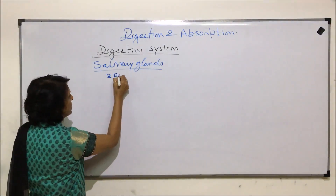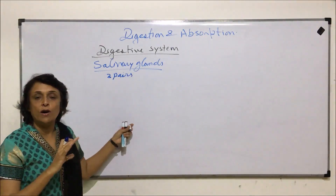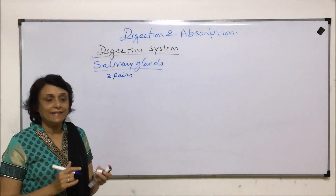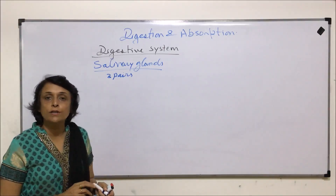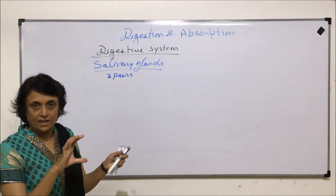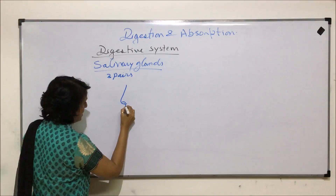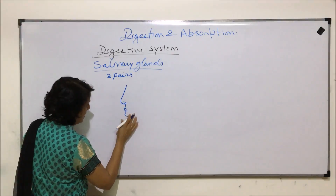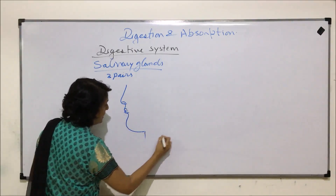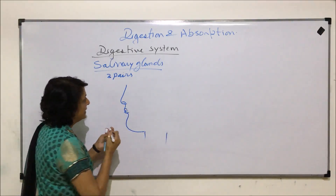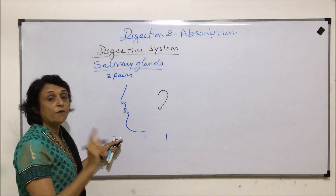There are three pairs of salivary glands. Let us draw a diagram to understand their location, and then we will discuss these glands in a tabular form so that all the information is present in one section. If we draw the buccal cavity showing all its parts — this is the place where the ear would come.